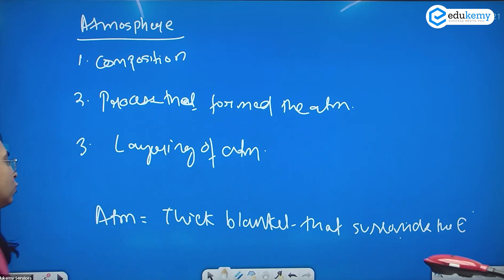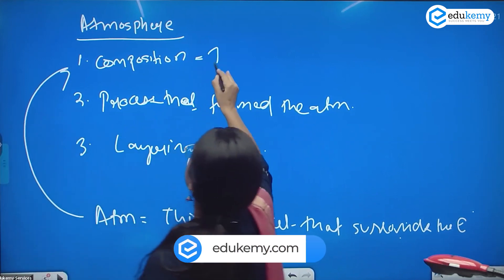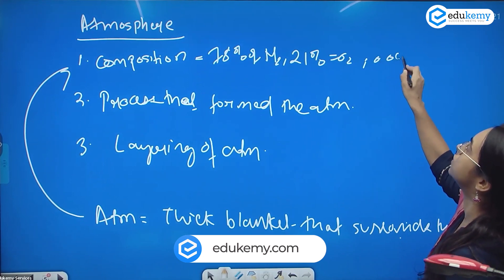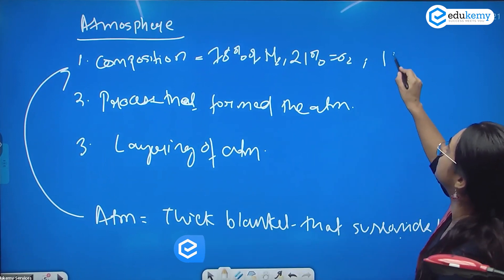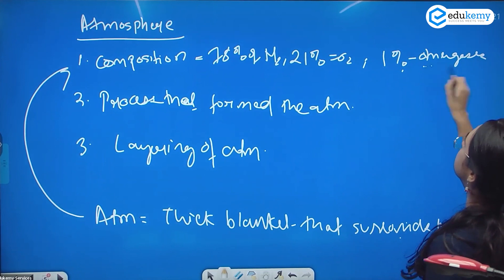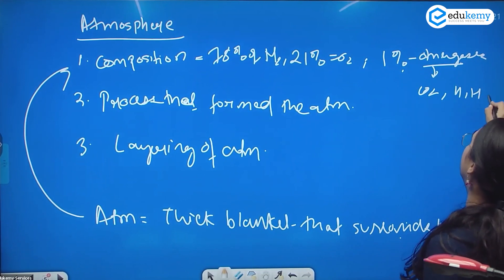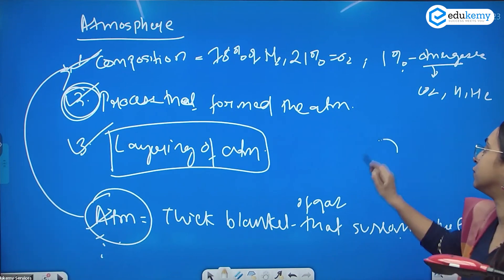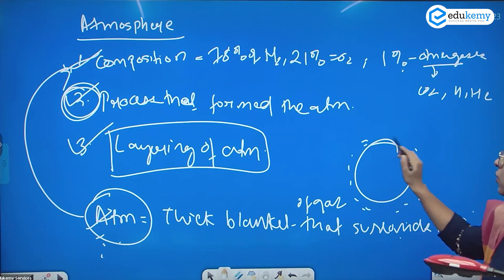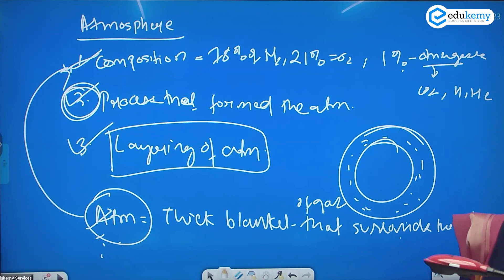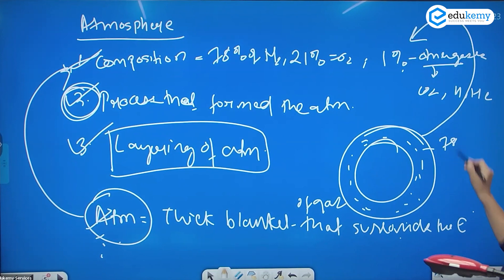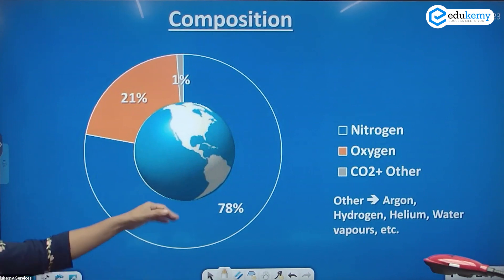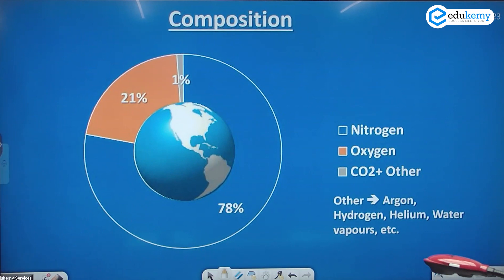If you look at the composition of atmosphere, we have 78% of nitrogen, 21% of oxygen, and about 1% of other gases, which includes CO₂, helium, hydrogen, argon, etc. So the composition of the gases is 78% nitrogen, 21% oxygen, and 1% other gases like argon, helium, water vapor, and hydrogen.